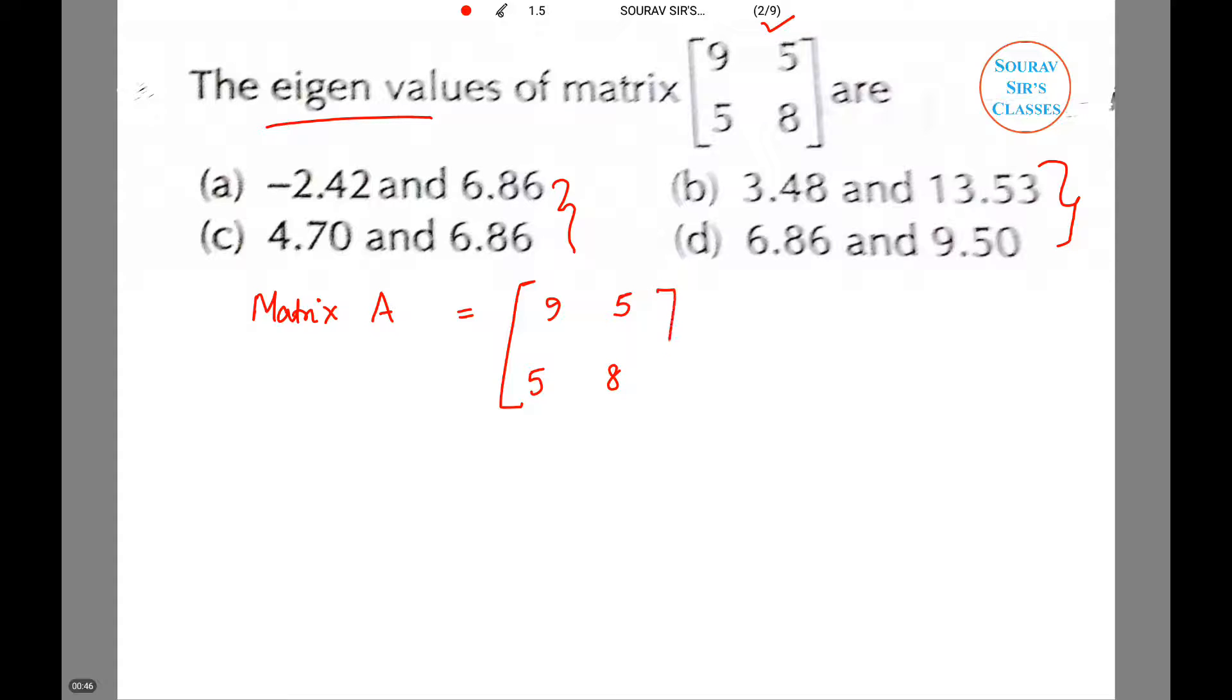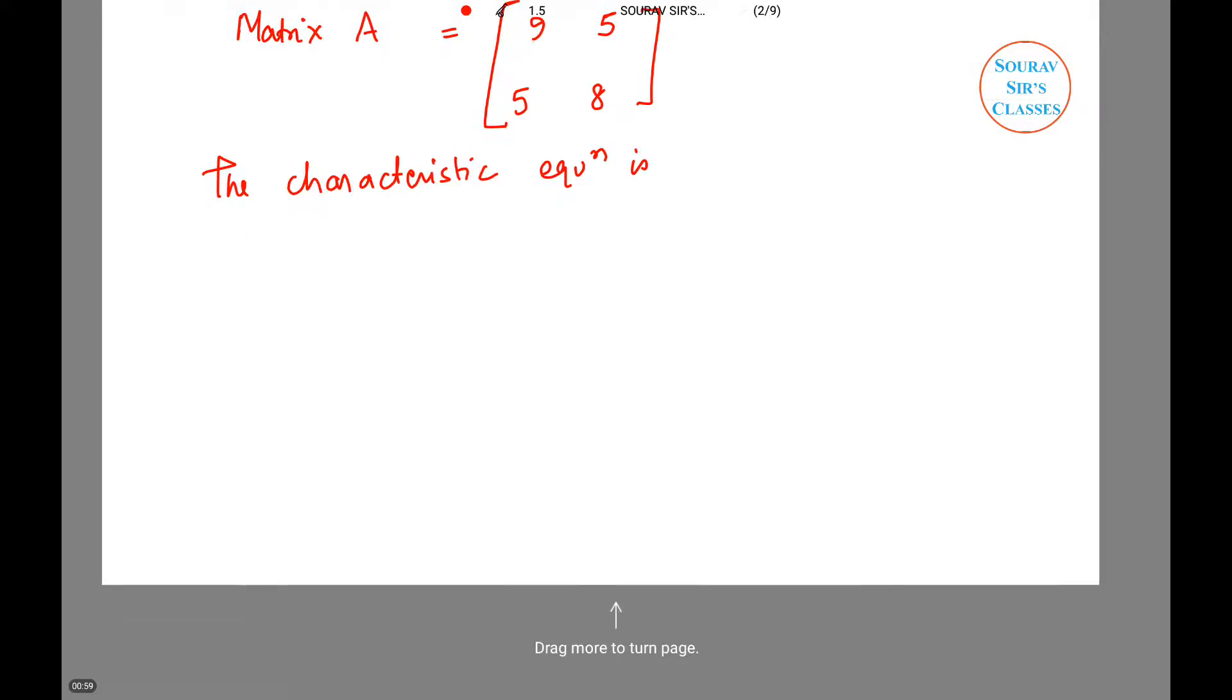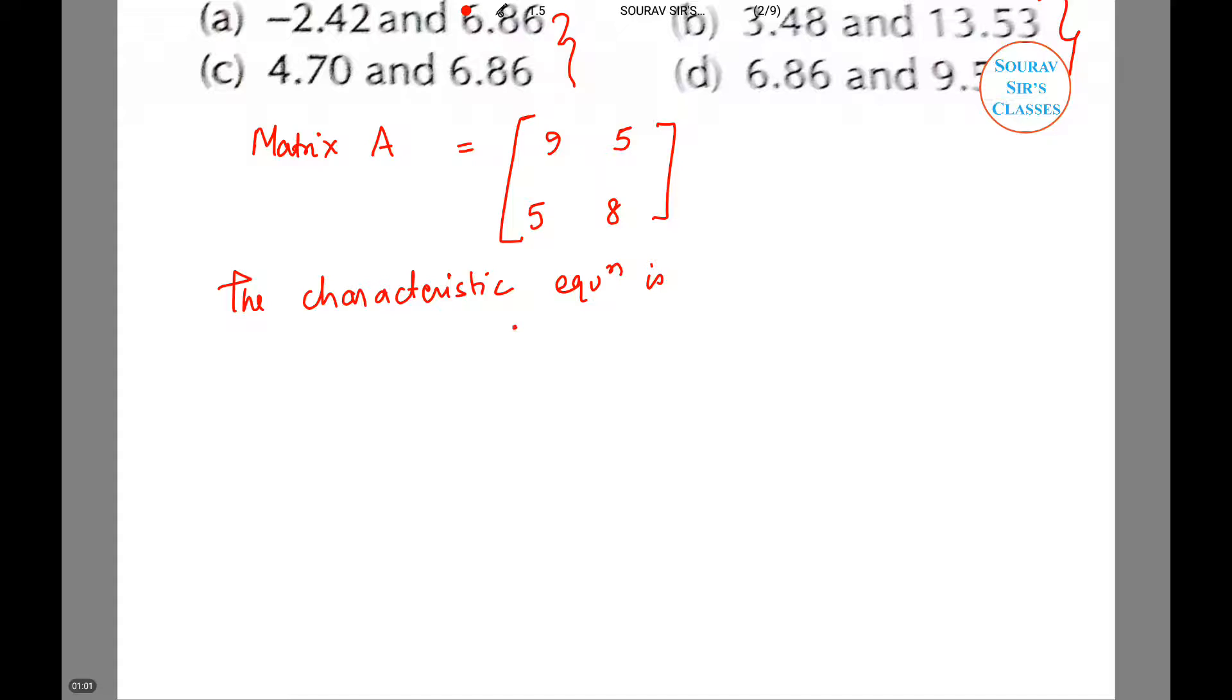So the characteristic equation is |A - λI| = 0. So it becomes [9-λ, 5; 5, 8-λ] = 0.